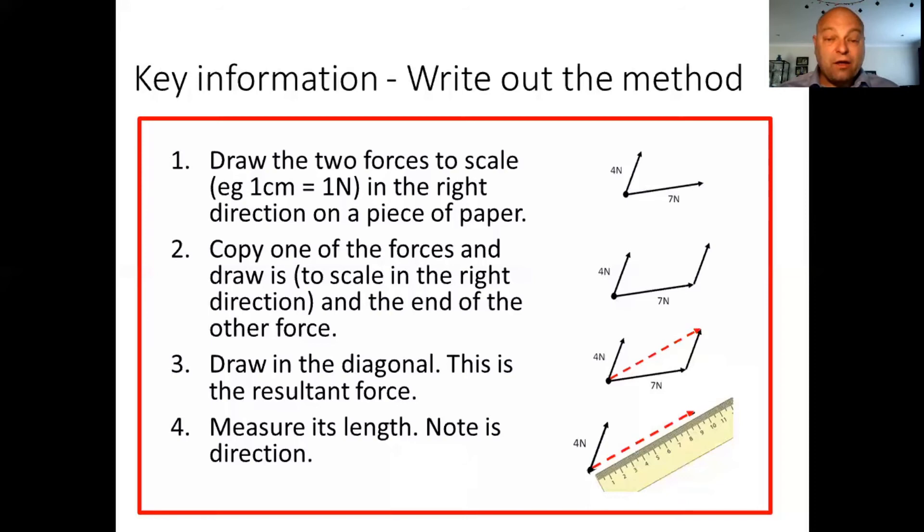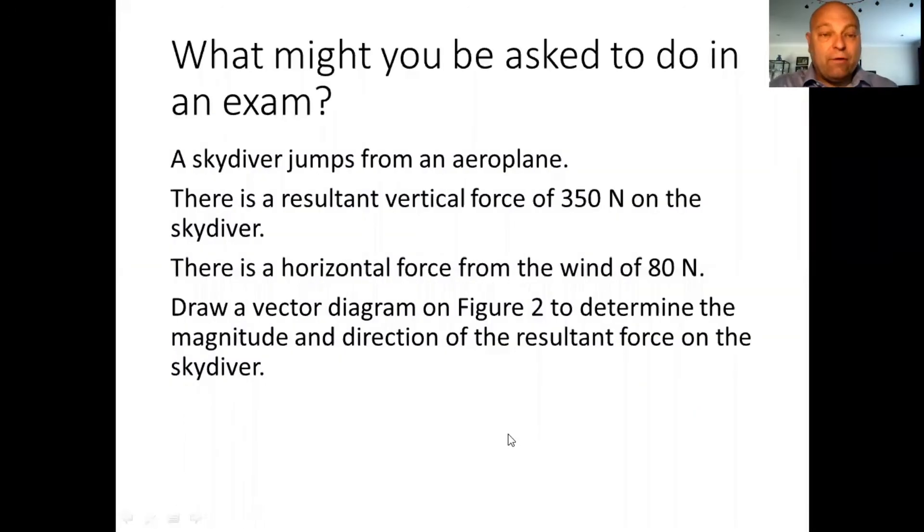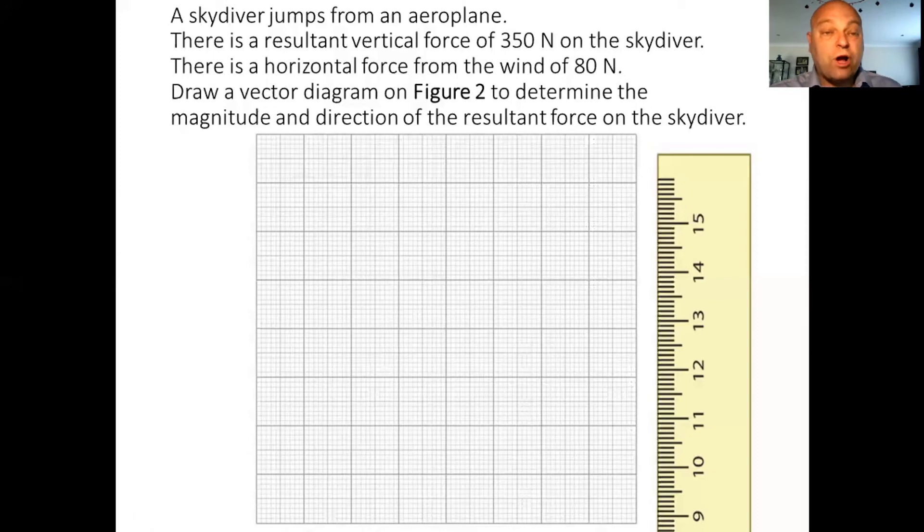Okay, let's get going again. Hopefully you've got that written out. Let's have a go at a little exam question. A skydiver jumps from an airplane. There is a resultant vertical force of 350 Newtons on the skydiver. The resultant vertical force is his weight, or gravitational force pulling him down, balanced by the air resistance pushing him up. And the overall resultant of those two forces is 350 Newtons. Horizontal force from the wind of 80 Newtons. Draw a vector diagram on figure two. Figure two was on the exam question, just graph paper, and we'll bring that up in a minute. To determine the magnitude, that's the size, and the direction of the resultant force on the skydiver. Let's have a go at working out our answer.